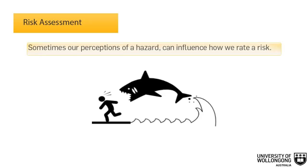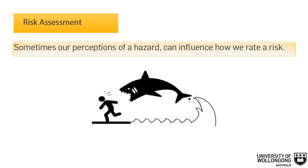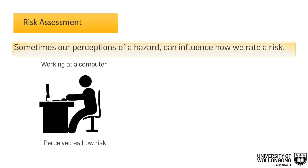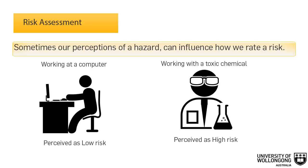Sometimes our perceptions of a hazard can influence how we rate a risk. For example, working at a computer is often thought of as a lower risk activity than working with a toxic chemical. However, a number of factors could make working at a computer the same risk as working with a toxic chemical.